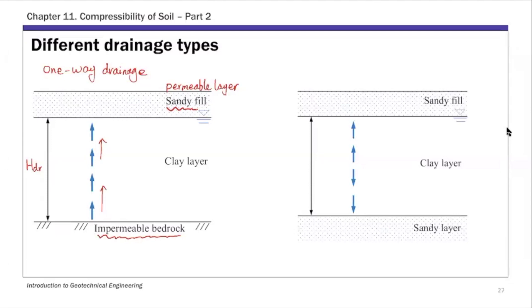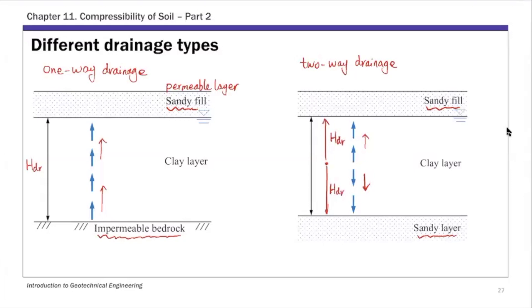For two-way drainage, we have a sandy layer on top and a permeable layer at the bottom, so water can go both ways. Therefore, the maximum drainage path H sub DR is actually half of the thickness of the consolidating layer — that's the maximum distance water needs to travel to get drained. The drainage path is half of the total thickness, so the total thickness is twice H sub DR. It's very important to distinguish these two drainage types when doing time rate of consolidation calculations.